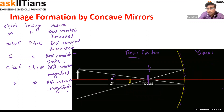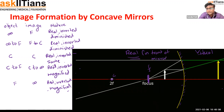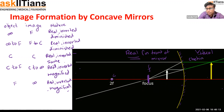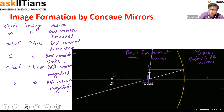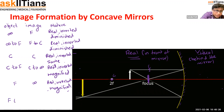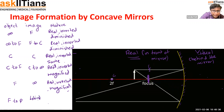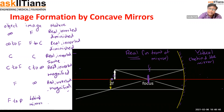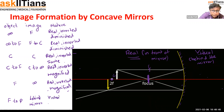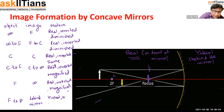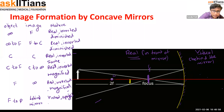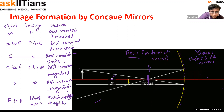All these cases where the image is real mean the image is in front of the mirror. Virtual means the image is behind the mirror. One last case: when the object is between the focus and the pole, the image goes to the other side — the virtual side, behind the mirror. This table is very important for solving numerical problems on these mirrors.